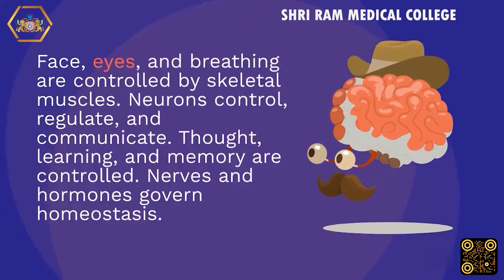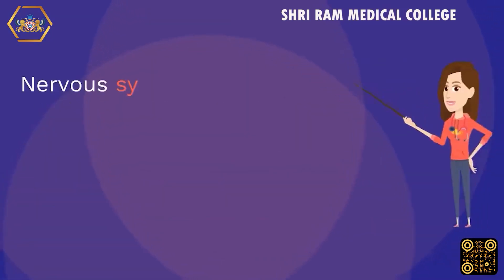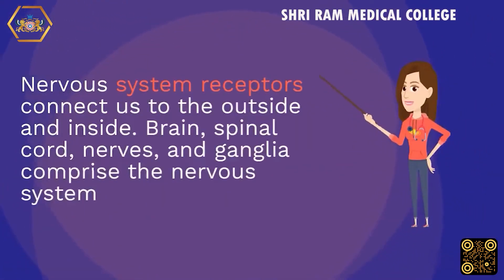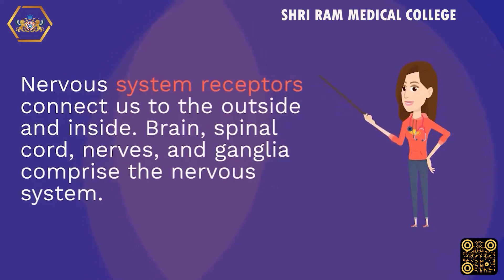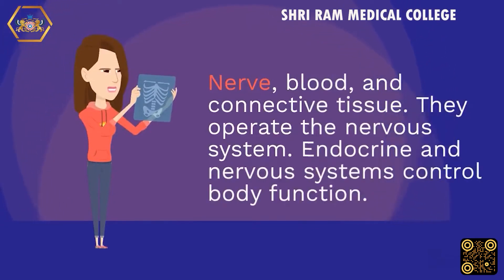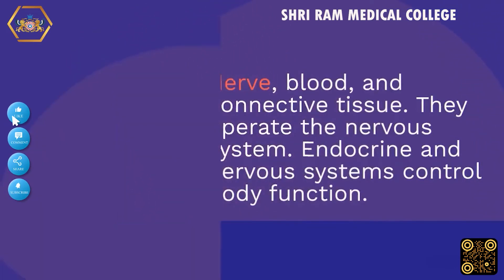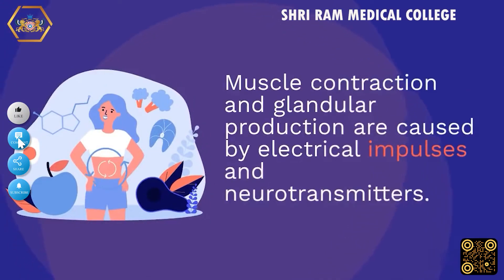Neurons control, regulate, and communicate. Thought, learning, and memory are controlled by the nervous system. Nerves and hormones govern homeostasis. Nervous system receptors connect us to the outside and inside world. The brain, spinal cord, nerves, and ganglia comprise the nervous system, which is made up of nerve, blood, and connective tissue. The endocrine and nervous systems together control body function. Muscle contraction and glandular production are caused by electrical impulses and neurotransmitters.